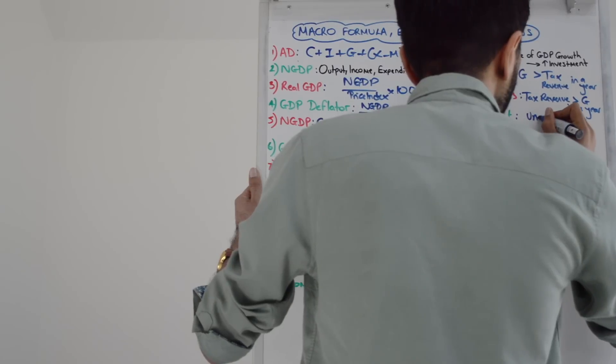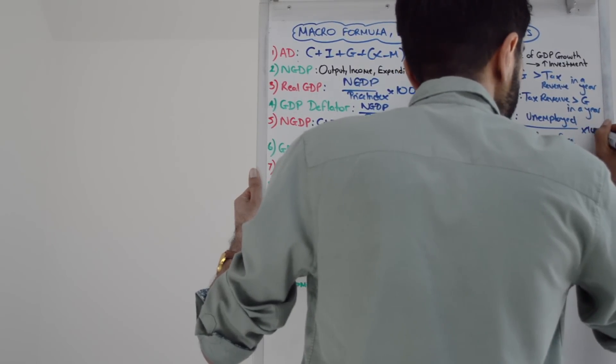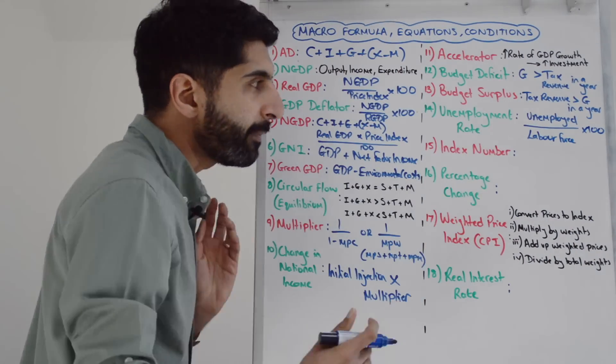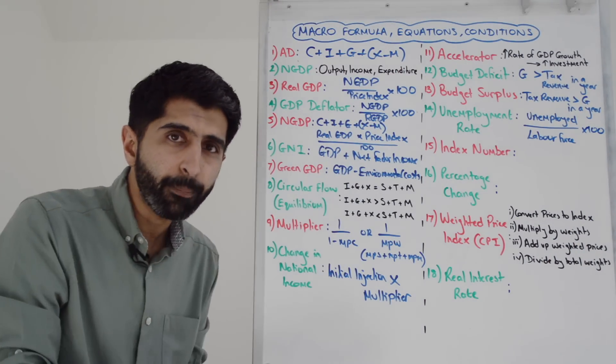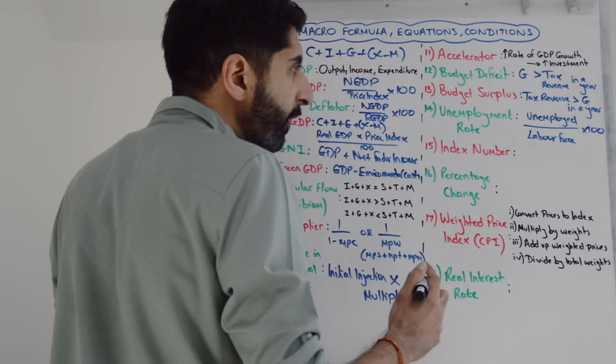The unemployment rate: you take the number of unemployed and divide by the labor force, the size of the labor force, then multiply by 100 to get the rate. Who are in the labor force? The labor force is made up of the employed and the unemployed.